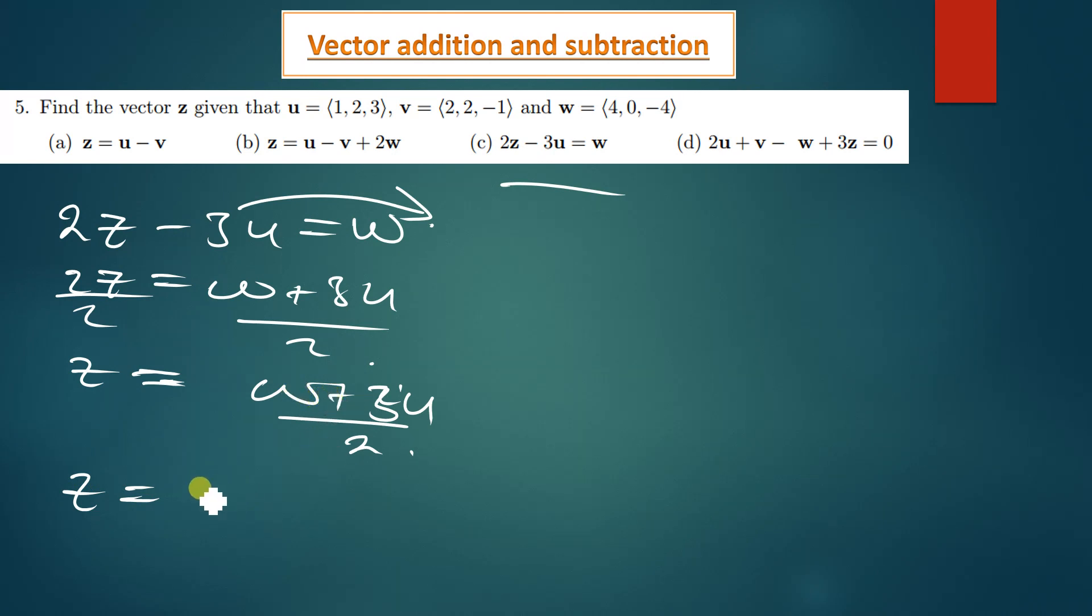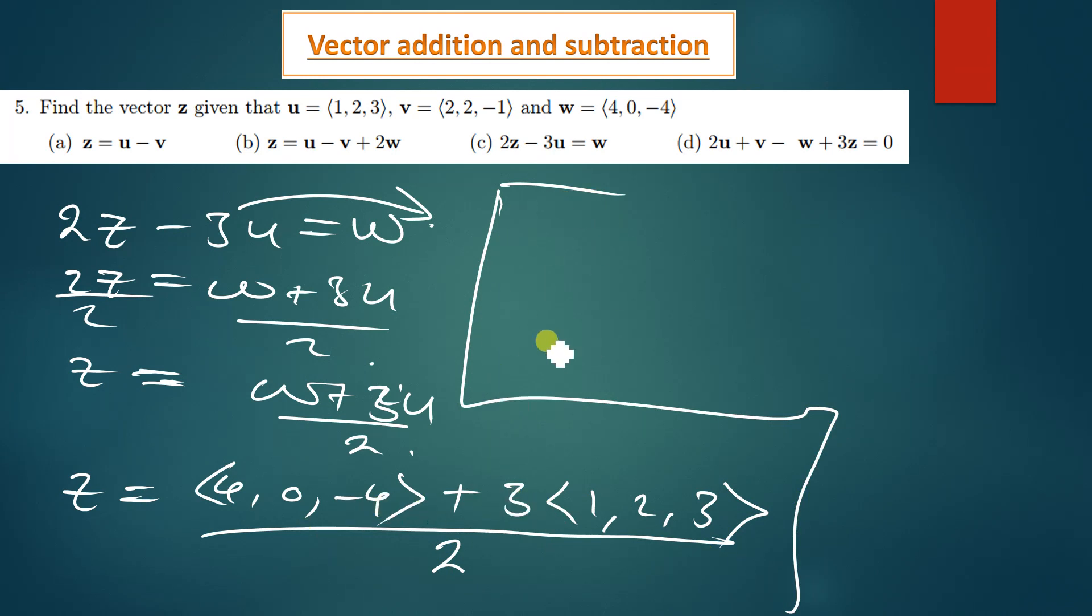So z is now going to be equal to, so w has been given according to the equation we have 4 comma 0 comma negative 4, and we have 3u. u has also been given to be 1, 2, 3, then we're dividing everything by 2. So to find z we have 4 comma 0 comma negative 4, then we multiply the 3 with everything in the vector, so 3 times 1 we have 3, 3 times 2 we're getting 6, 3 times 3 we're getting 9, and then we are dividing everything by 2. So z is therefore going to be equal to 4 plus 3, this will give us 7, 0 plus 6 will give us 6, and then negative 4 plus 9 we are getting 5, we're dividing everything by 2.